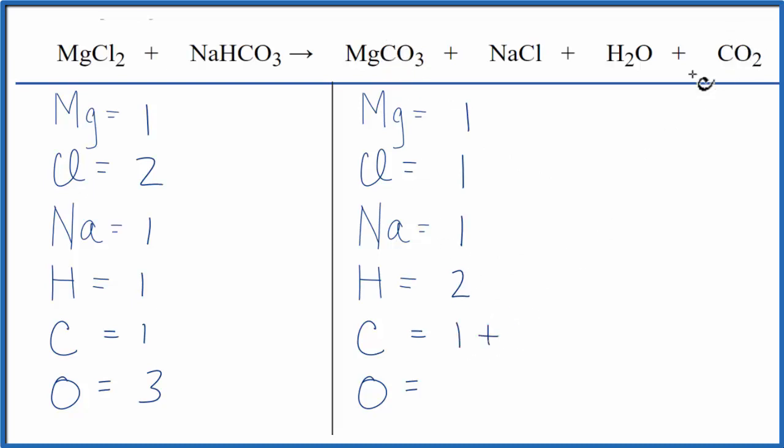plus you have the 1 here. That gives you 2, and then oxygens you have 3 plus 1 plus 2. So you have 6 oxygen atoms.